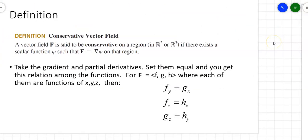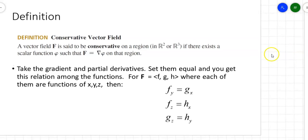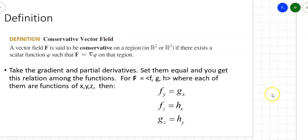If a vector field is conservative, it follows these rules. A conservative vector field means the vector field is the gradient of some potential function on a region. Taking the partial derivatives and setting them equal gives three relations: the partial of f with respect to y equals the partial of g with respect to x; the partial of f with respect to z equals the partial of h with respect to x; and the partial of g with respect to z equals the partial of h with respect to y. If those three things are true, you have a conservative vector field, and conversely, if you're told it's conservative, those three things must be true.